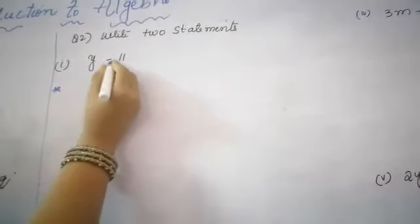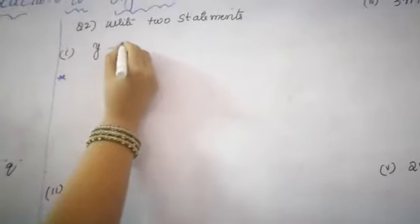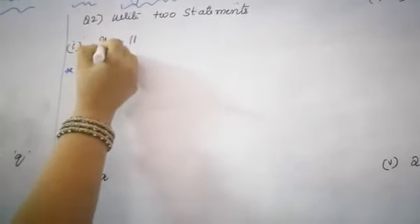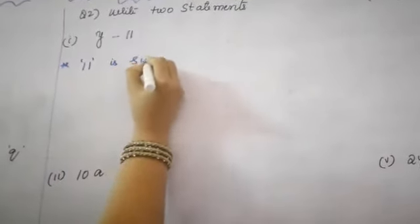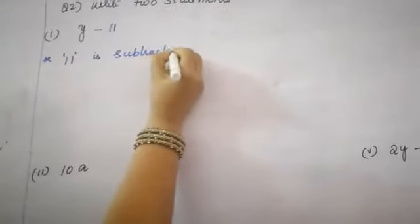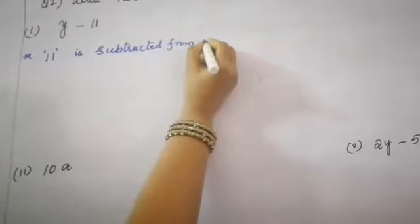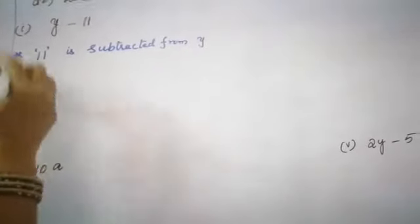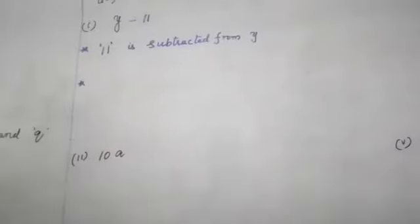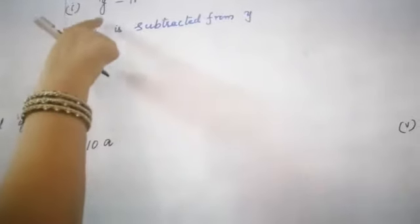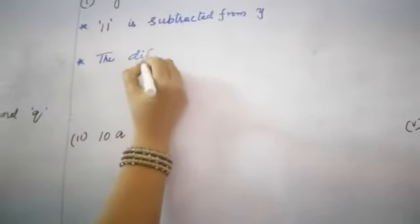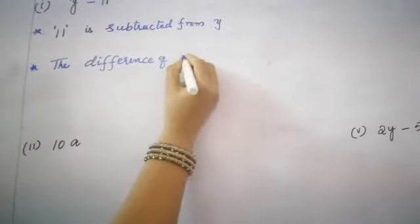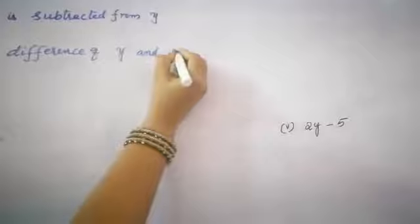For the expression Y minus 11, first statement: 11 is subtracted from Y. One more — for the minus sign you use the word 'difference': the difference of Y and 11.